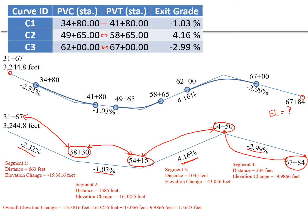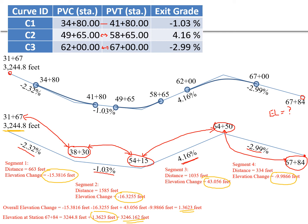To find the overall elevation change, we add each component: negative 15.38, negative 16.32, positive 43.056, and negative 9.98. This gives a net change in elevation of positive 1.3623 feet from the beginning station to the end. Since we start at an elevation of 3244.8 feet, we add that delta to get a final elevation of 3246.162 feet at the end of the alignment. That's our final answer for this part of the problem.